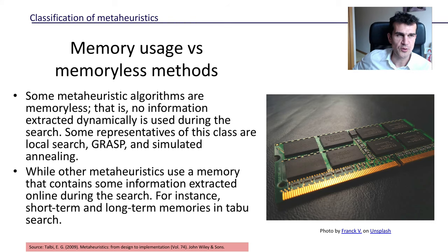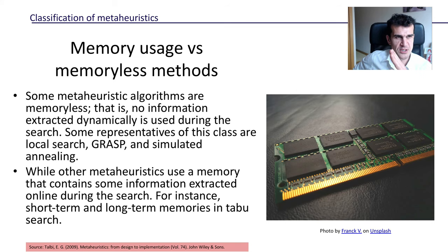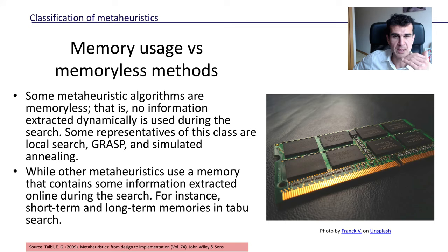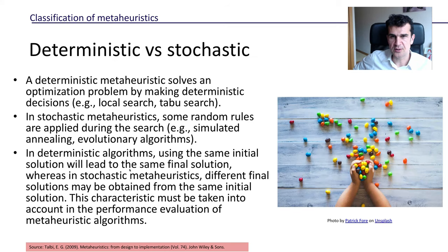There are other meta-heuristics like simulated annealing that are inspired by certain physical processes. We can also classify meta-heuristics according to whether they use some information from the past — and in order to do that they are going to require some memory — or not, meaning they just don't use any information whatsoever.